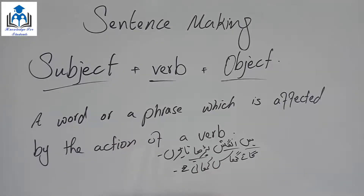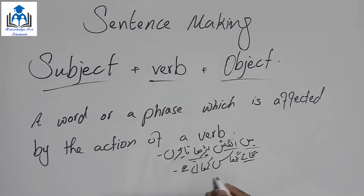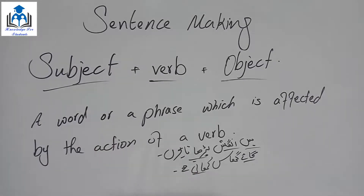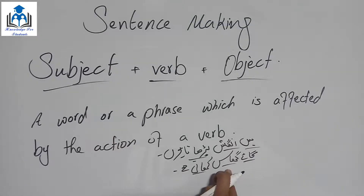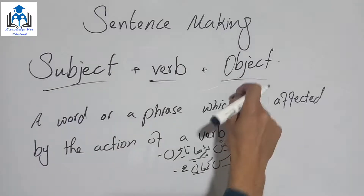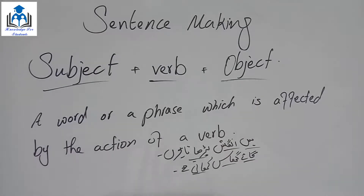'گائے گھاس کھاتی ہے' — گائے = subject, کھاتی ہے = verb. But what is she eating? The action of eating is happening on 'گھاس' (grass) — so 'گھاس' is the object. Remember: the thing upon which the action is occurring is the object.